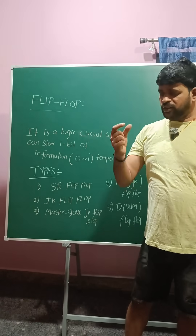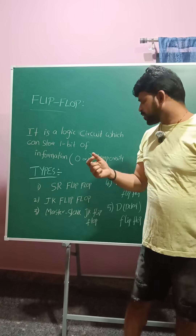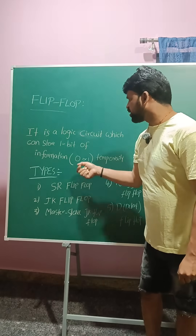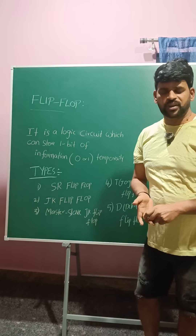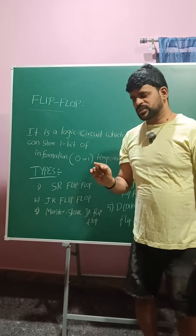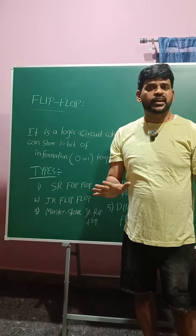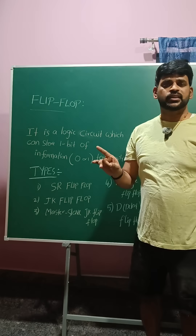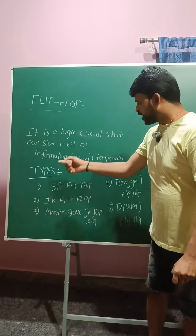A flip-flop is a logic circuit which can store one bit of information — either logic zero or logic one. It is also called a bi-stable device which stores data temporarily. One flip-flop stores one bit of information.